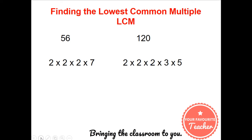The second step is we get the highest common factor by scratching off each of the common numbers. And in this case the highest common factor of 56 and 120 is 8.